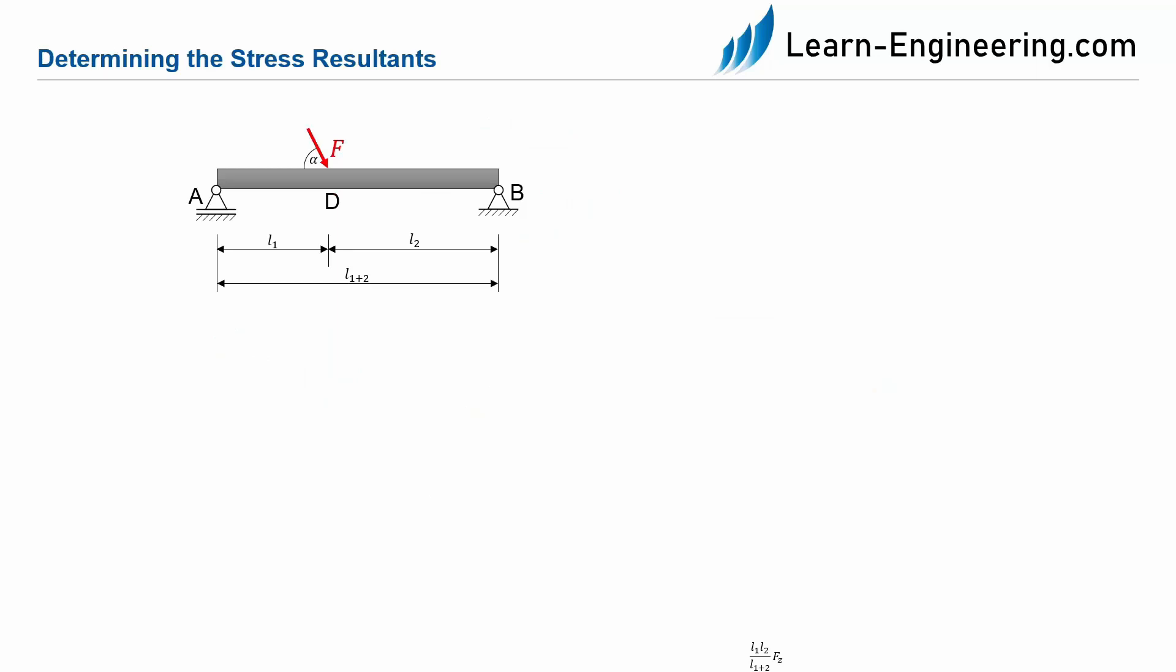In this slide we will now determine the stress resultants using a simple example. As an example we have a beam whose dead weight can be neglected. The beam is supported at point A by a simple support and at point B by a hinged support.